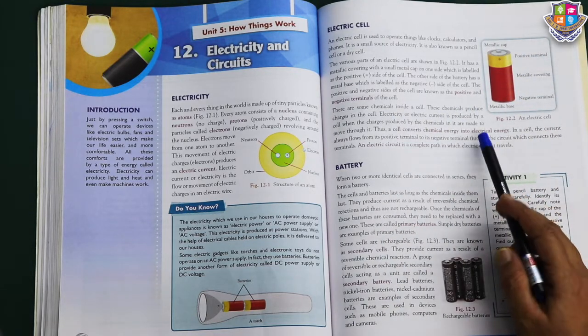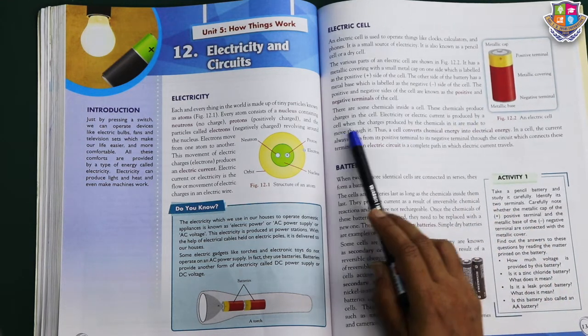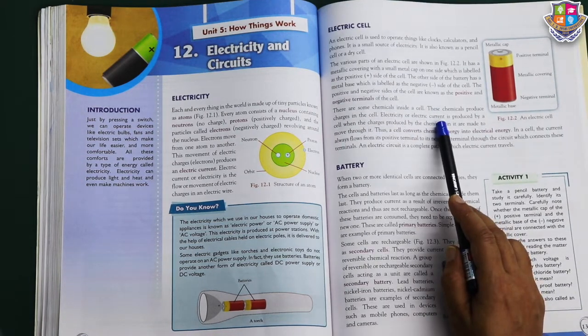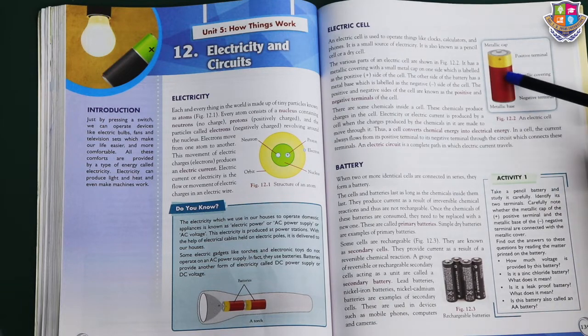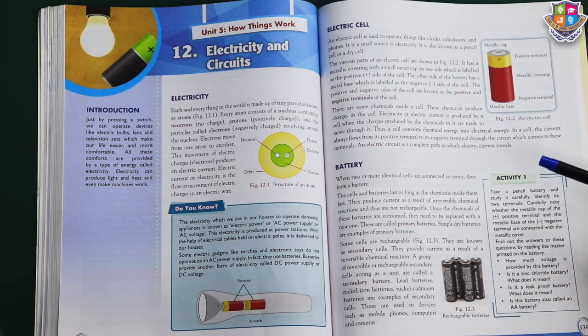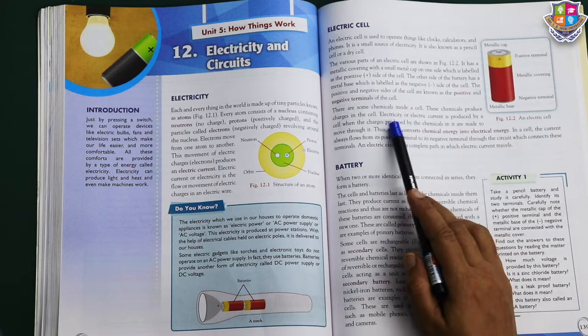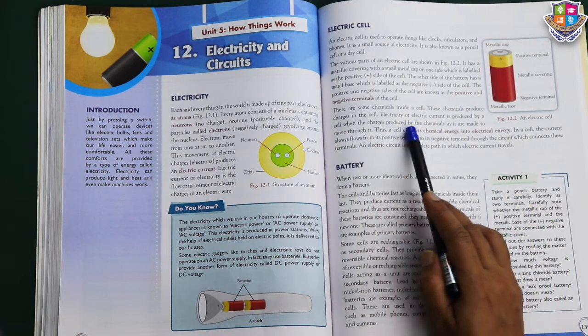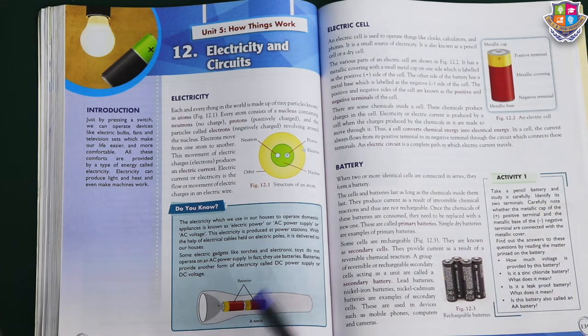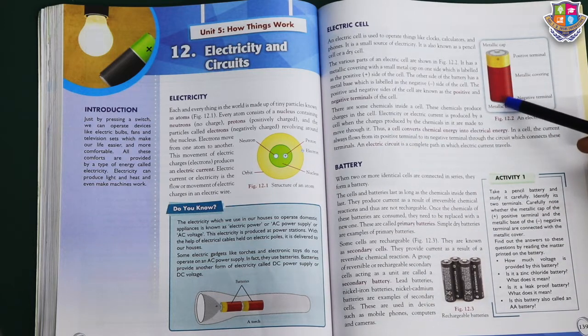When they are manufactured, we can see that there are chemicals inside there. Electricity or electric current is produced by a cell when the charges produced by the chemicals in it are made to move through it. How is current produced? When charges are produced. How are charges produced? The chemicals in the battery have reactions. When atoms release their electrons, charge is produced. Positive or negative charge. Thus, a cell converts chemical energy into electrical energy. The current always flows from positive terminal to its negative terminal. That's why we place them one after another. When we put the battery in reverse, charges do not flow and our torch will not light.